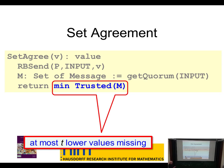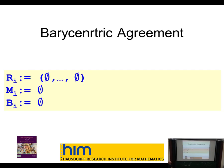Barycentric agreement, which is fairly straightforward in the crash failure model, is actually a lot more complicated in the Byzantine model. What we want is that everybody ends up with a set of vertices with the property that any collection of values received by people is ordered by inclusion — because that's what defines barycentric agreement in combinatorial topology. A vertex of the barycentric subdivision is just an ordered sequence of faces. Process i keeps track of all the messages received from everyone — always a good start for a distributed algorithm.